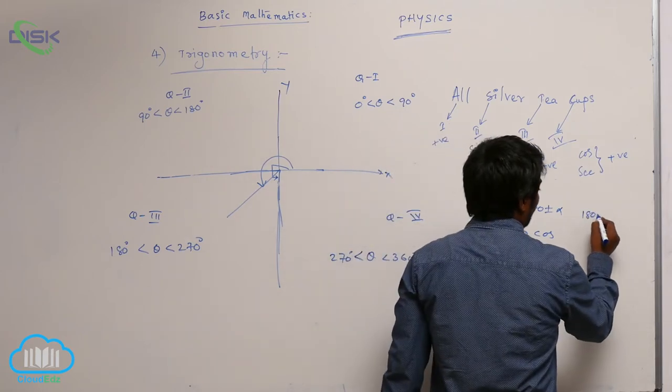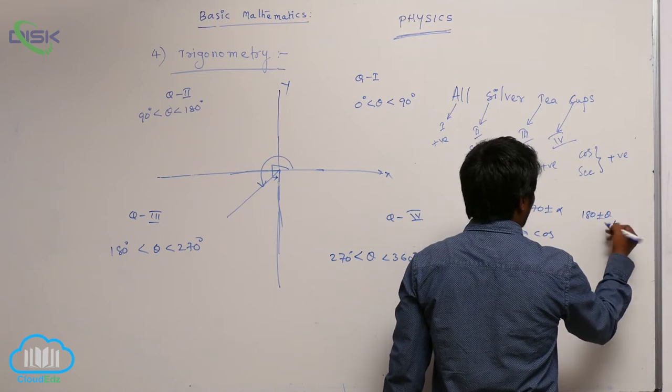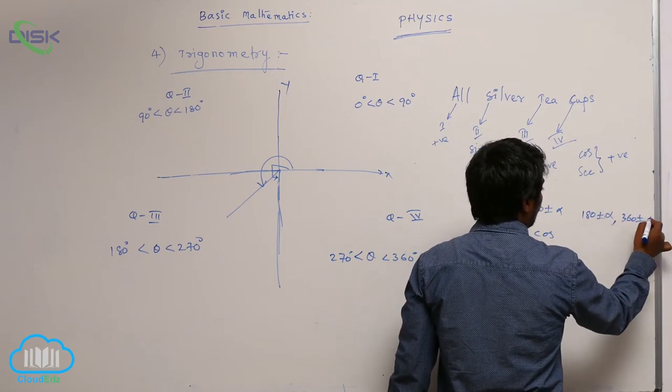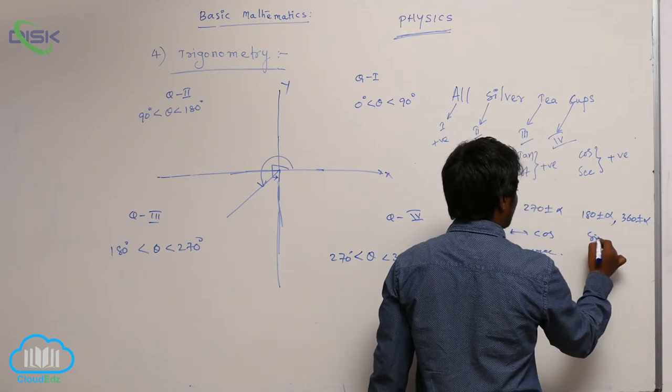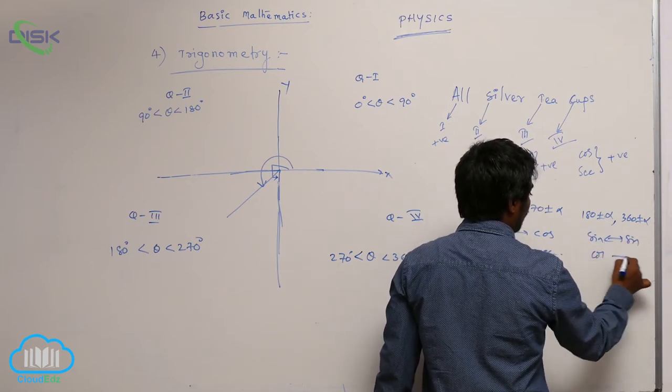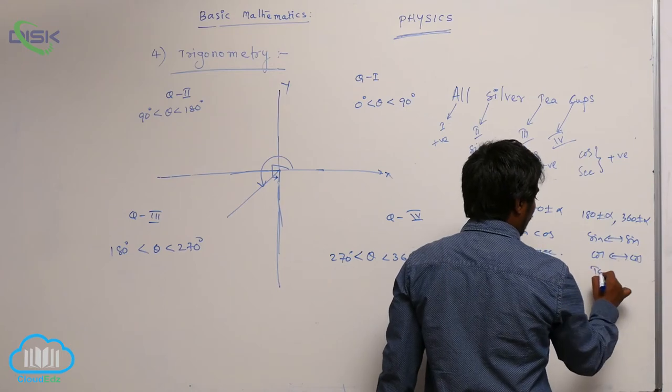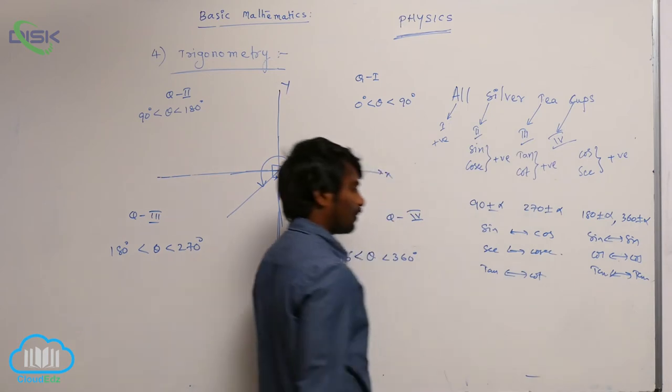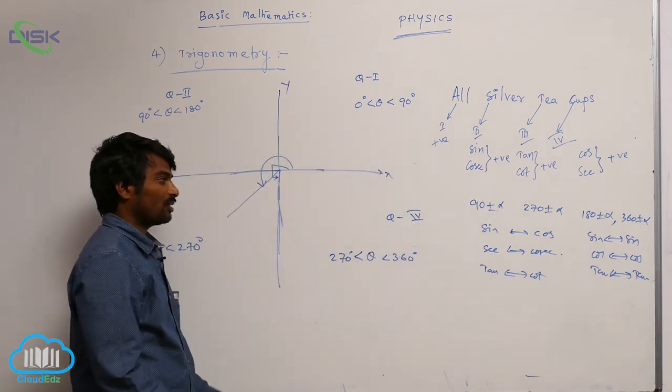For 180 plus or minus theta or 360 plus or minus alpha, you will have sin as sin only, cos as cos, tan as tan only. The same functions remain.